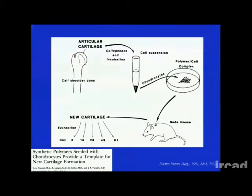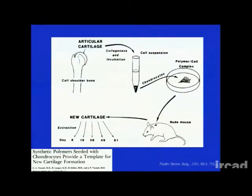Here's a nice schematic from 1991 from Jake Canty in Boston, demonstrating one of the first reports of tissue engineering. This used cartilage from the shoulder bone of a cow, digesting that cartilage with collagenase, identifying the cells — in this case chondrocytes — seeding them onto a polymer, and implanting them into an athymic or nude mouse. The chondrocytes would then form new cartilage and the polymer would degrade. This is the basic premise of tissue engineering.